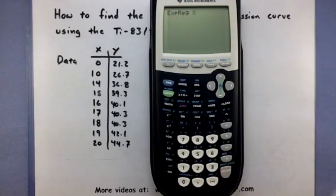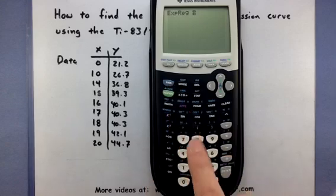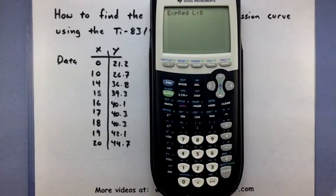And now it shows up on the screen. Now we want to feed it list 1 and list 2 so that I can do the exponential regression using this data. In blue, you'll find these above your keys on 1 and 2. So I'll press second 1 for list 1, comma, second 2 for list 2, another comma.